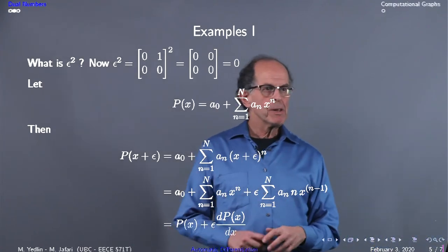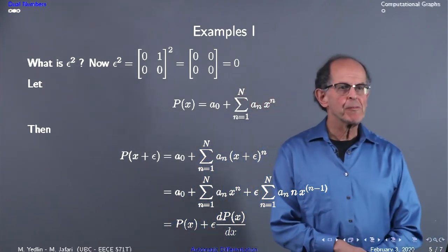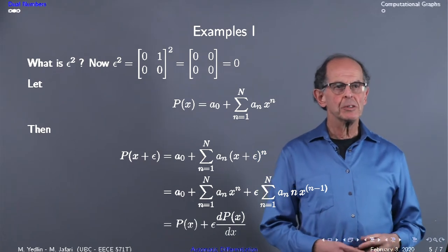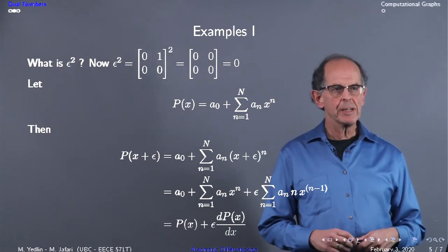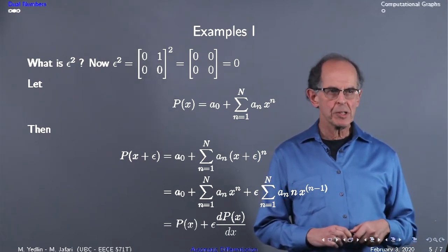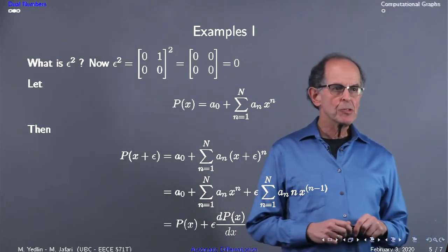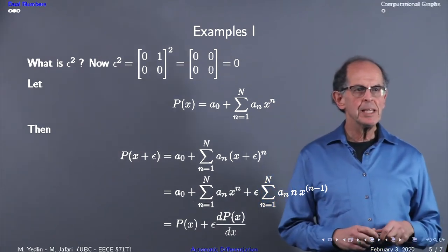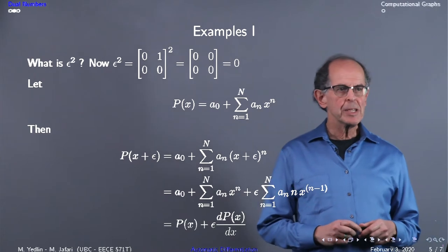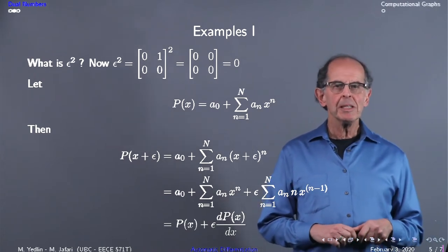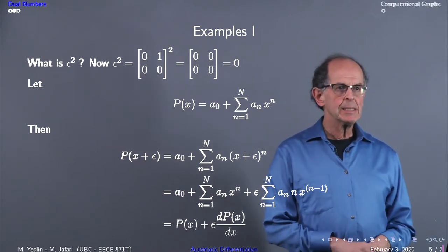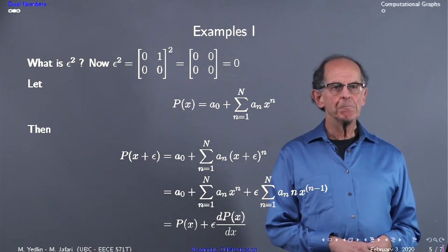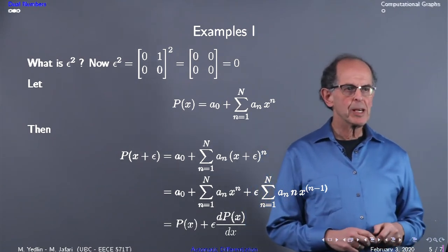Let's start applying dual numbers. First, epsilon squared equals zero. Now let's do some algebra. p(x) equals a₀ plus... is a polynomial of degree N. Let's compute p(x + epsilon).